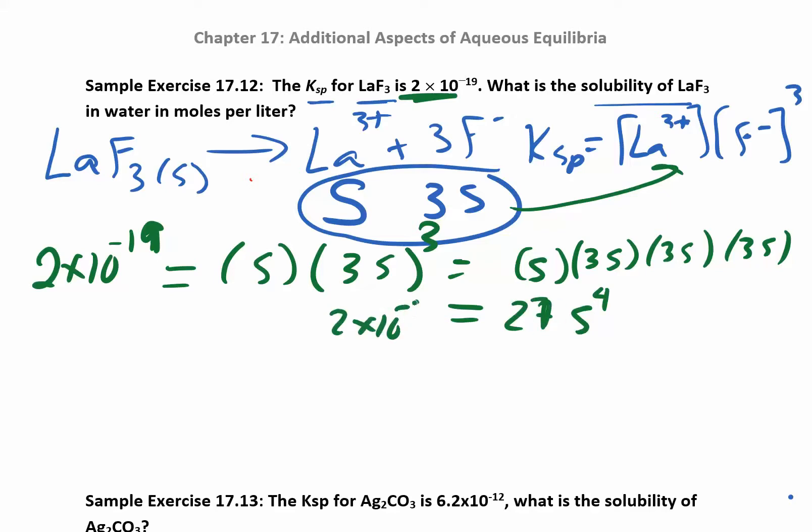So you have 27s to the fourth is equal to 2 times 10 to the negative 19. And now all you have to do is solve for s. So divide by 27, divide by 27.